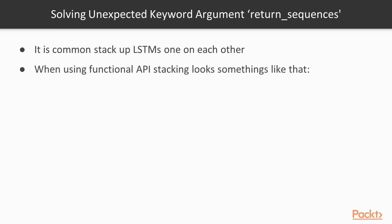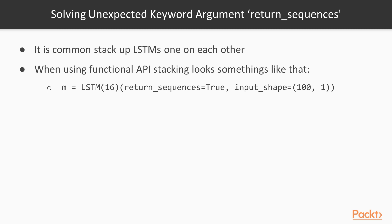When you do that in the functional API, it looks like this. This is actually the first LSTM layer, and then we can add more. Notice that when we stack LSTM layers, you have to provide the return_sequences argument to do that. You can even stack more of those layers.